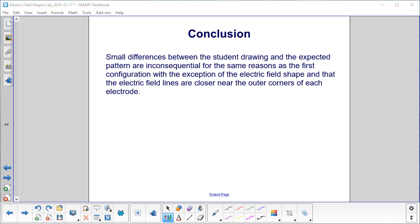Your students may have small differences between their drawing and the expected pattern. Don't worry about it, basically for the same reasons as your first configuration, except what will be different this time: the electric field shape, and that the electric field lines are closer near the outer corners of each electrode. That's your edge effect going on.